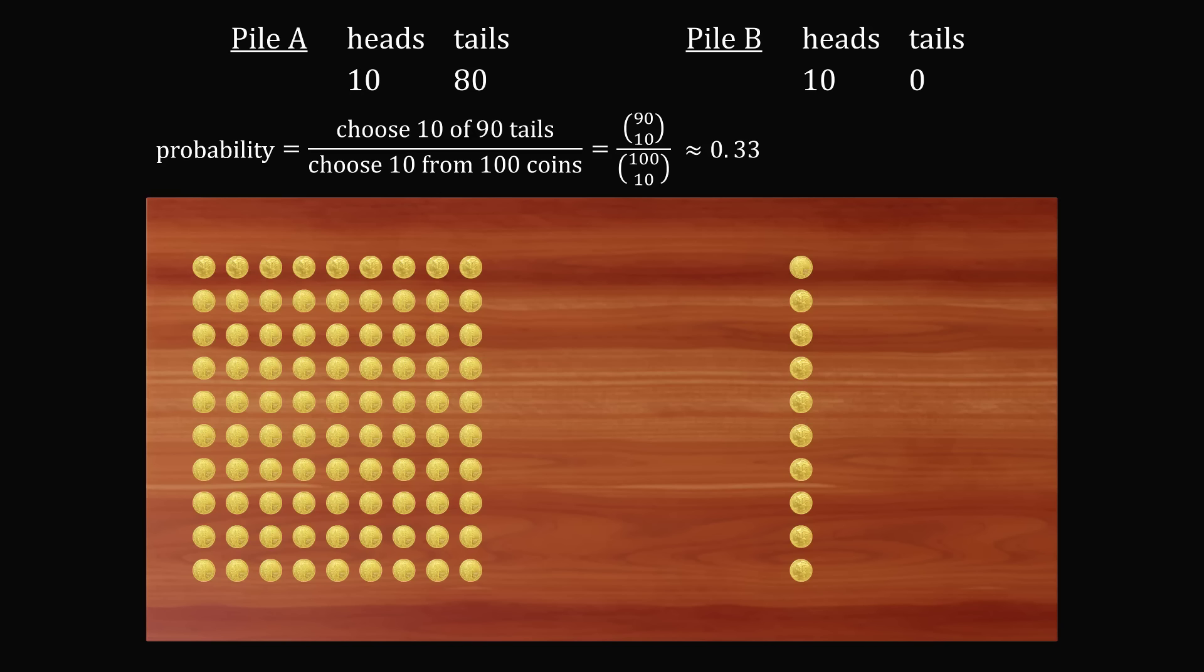And one out of three times is not that bad, just for random chance. But what if we weren't so lucky? What if instead of grabbing all 10 tails, we instead grab nine tails and one head? How close would we be to a solution? Let's try to work this out.